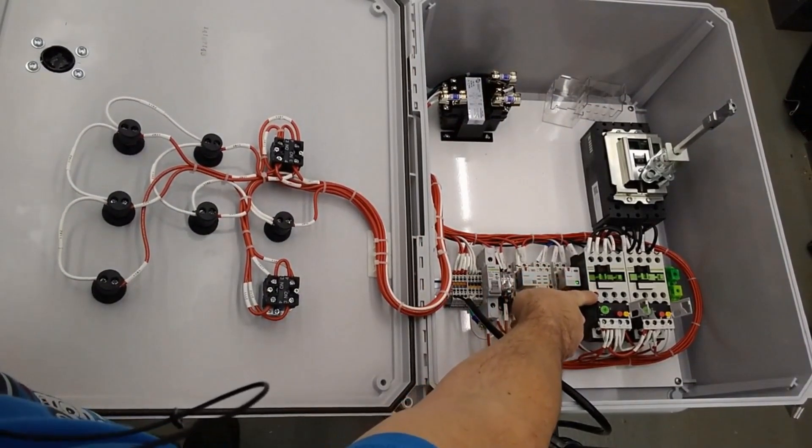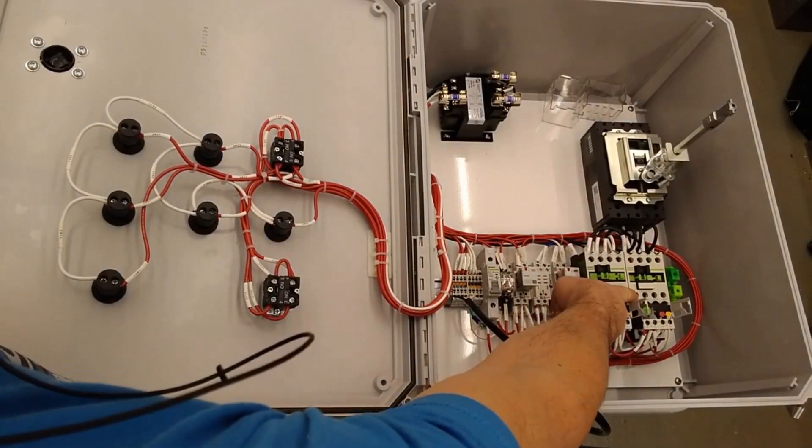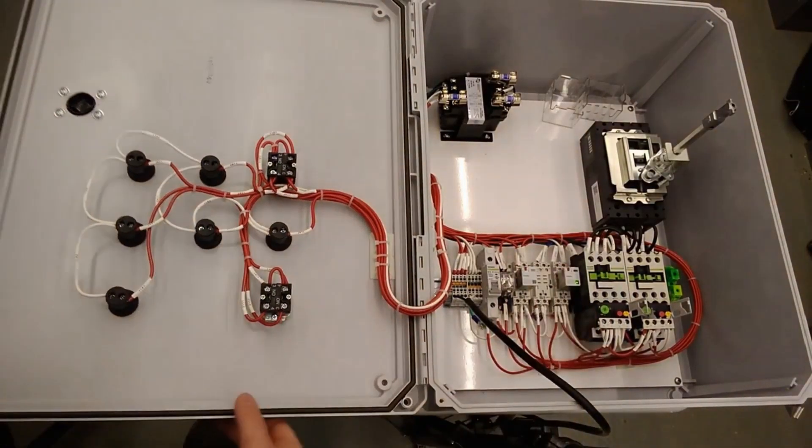So fan 1 contactor comes on and you can see the relay came on. Fan 2 contactor comes on you can see the relay comes on.